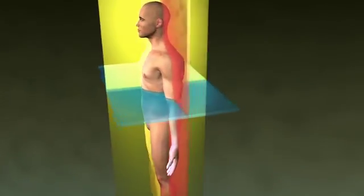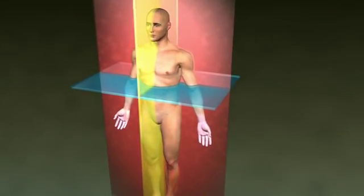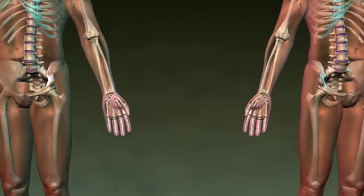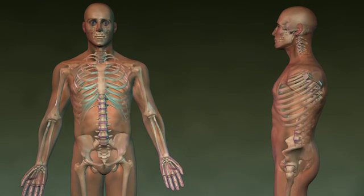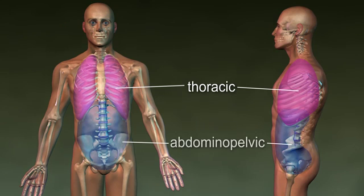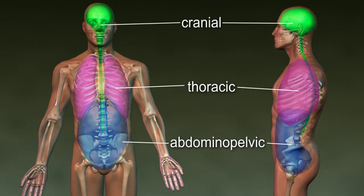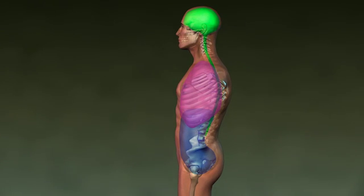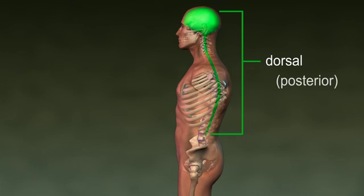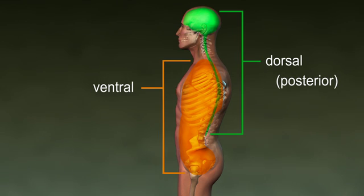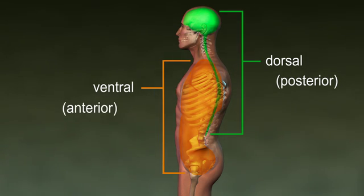Understanding the body planes and directions will help you be able to visualize positional and spatial locations of structures. Medical professionals will also use the body cavity approach to identify the location of an organ or structure. Body cavities are spaces within the body that contain and protect internal organs. Naming the body cavity where the organ lies can easily identify the location of organs or structures. Both main cavities are subdivided into smaller cavities, and membranes line these cavities.